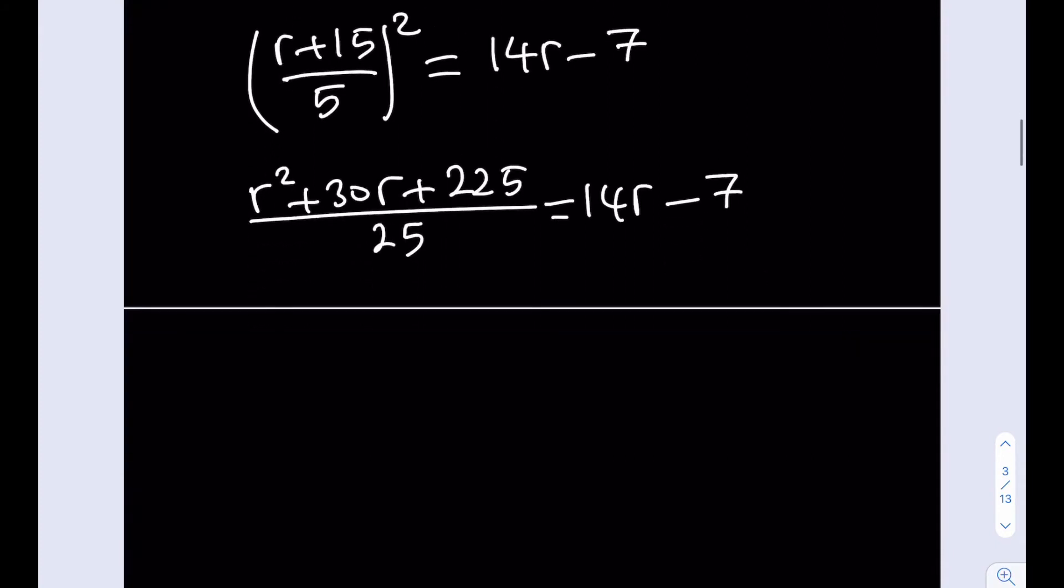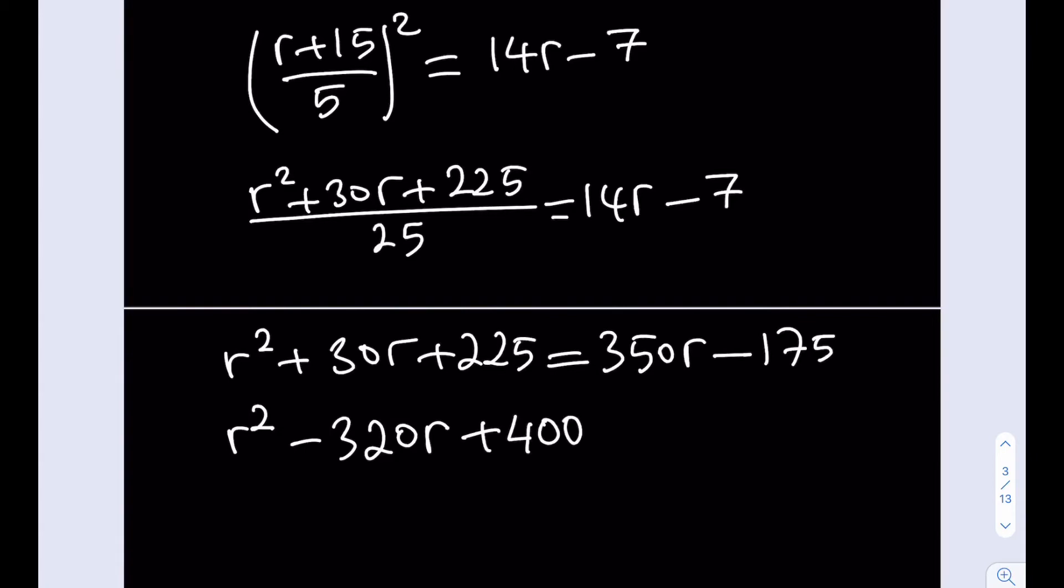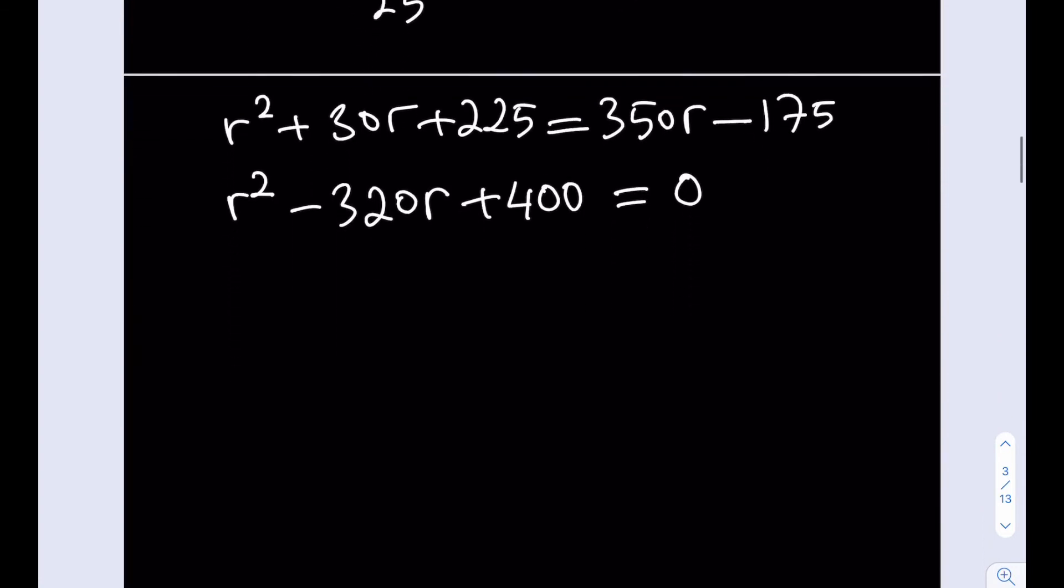Now I can replace x with r plus 15 over 5 squared and set it equal to 14r minus 7. Once we solve this equation we should be able to find r. I'm going to square the top, r squared plus 30r plus 225 divided by 25 equals 14r minus 7. Let's cross multiply. r squared plus 30r plus 225 equals 350r minus 175. So let's put everything on the same side and solve for r. You're going to subtract 350 from 30, which gives you negative 320r, and 225 plus 175 is 400.